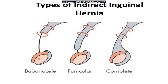When the hernia crosses the superficial ring, it is called funicular. However, remember that in funicular, it does not come out at the bottom of the scrotum. When it reaches the bottom of the scrotum, it is called complete indirect inguinal hernia.